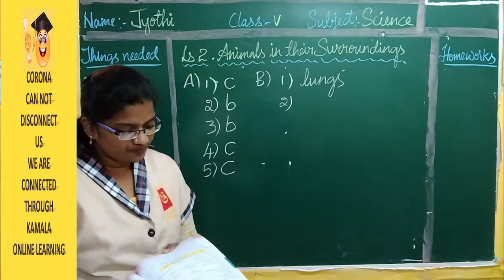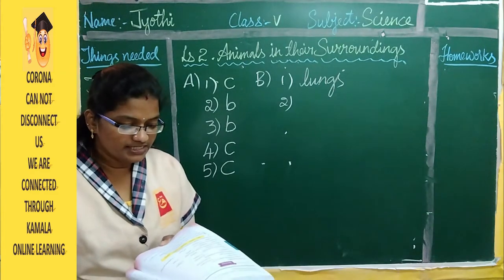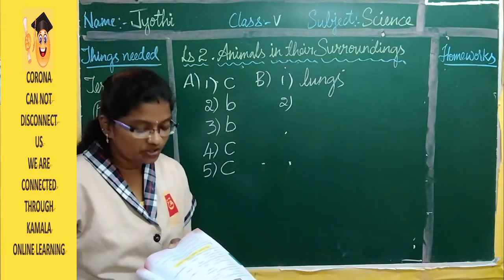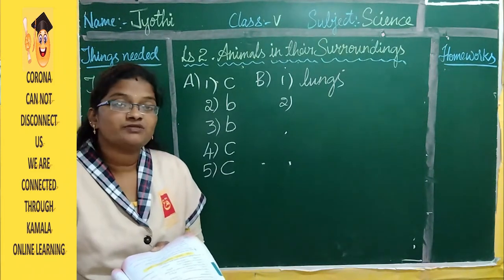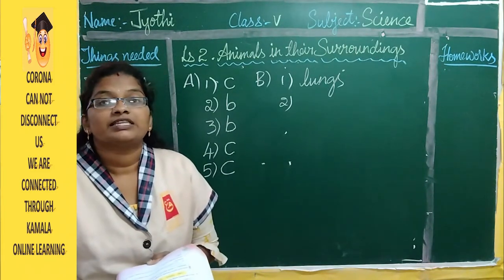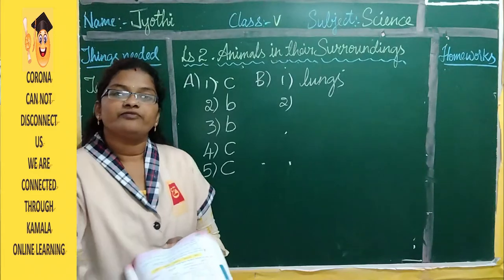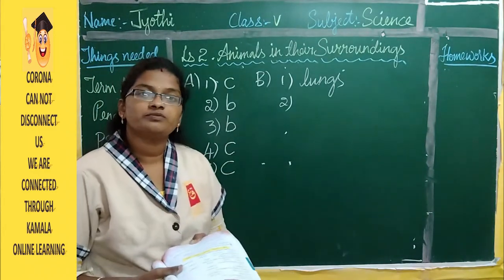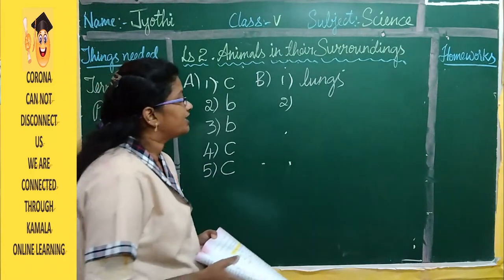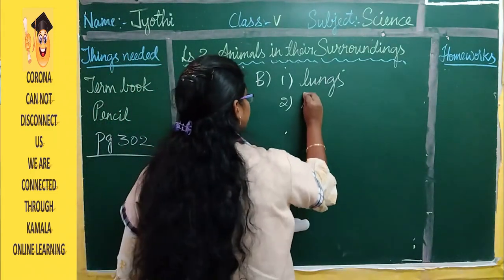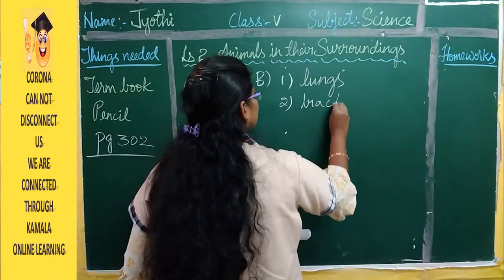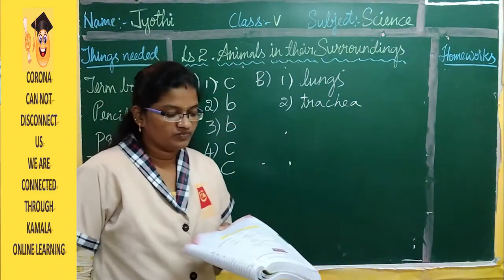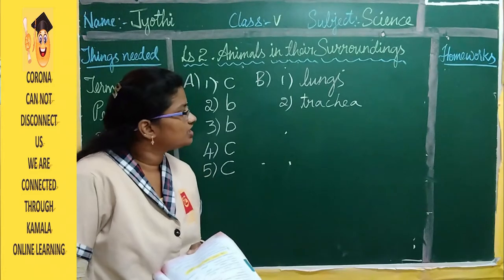Second blank: spiracles in insects lead into a network of tubes called the trachea — T-R-A-C-H-E-A.